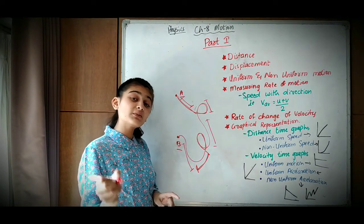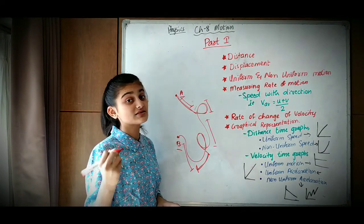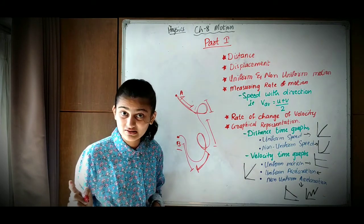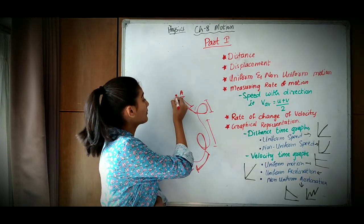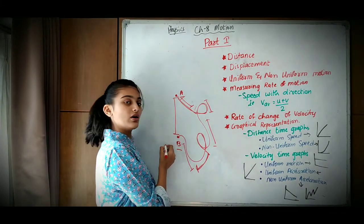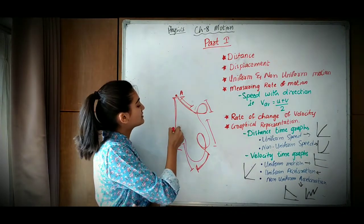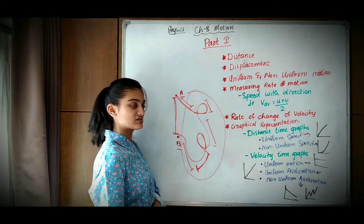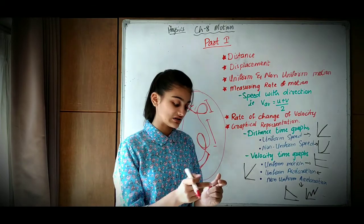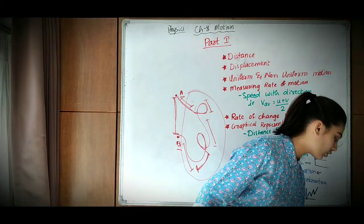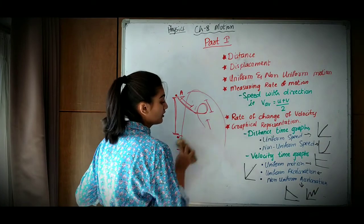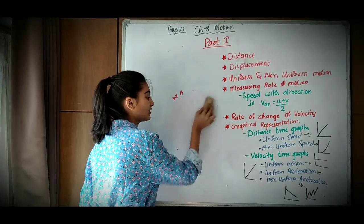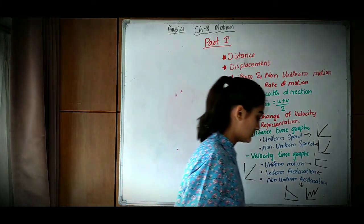But what will be the displacement? The shortest distance covered by the person is known as displacement. So the shortest distance is from A directly to B — that is the displacement, while the entire winding path the person traveled is the distance covered. This is what actually differentiates distance and displacement.